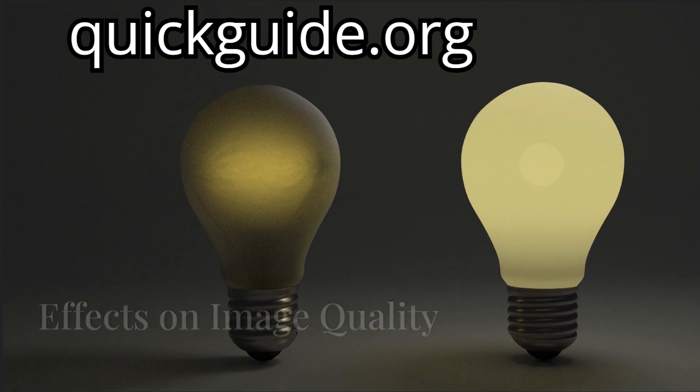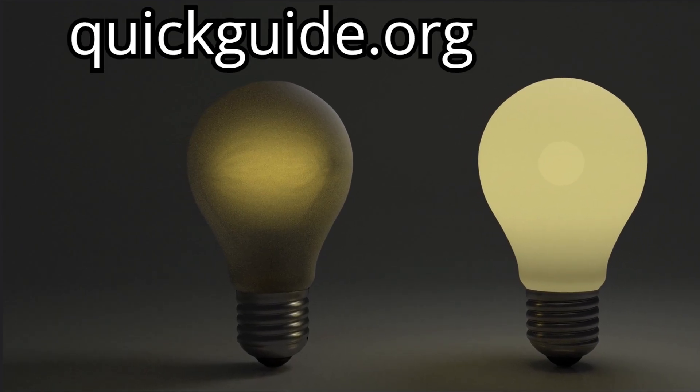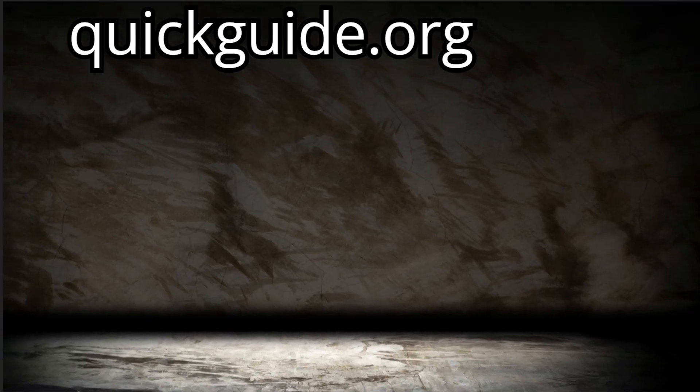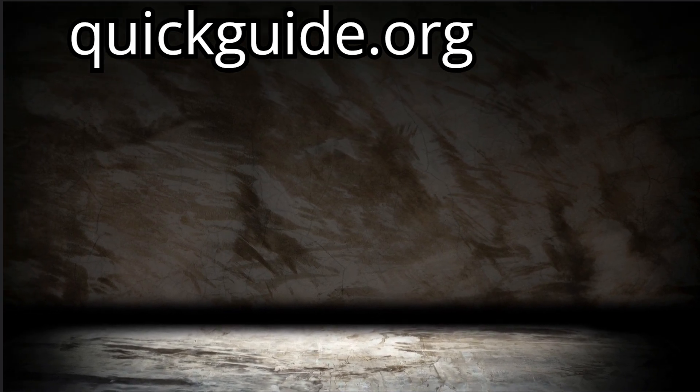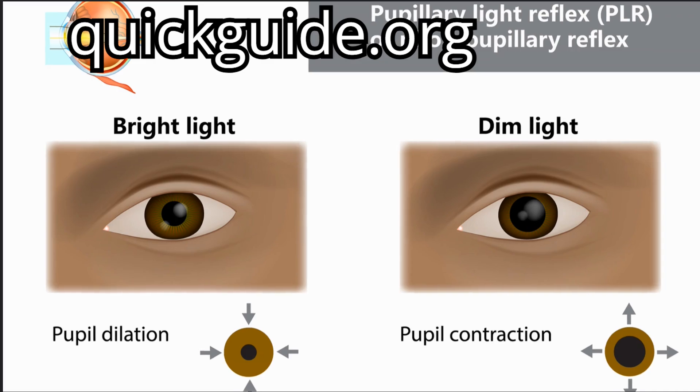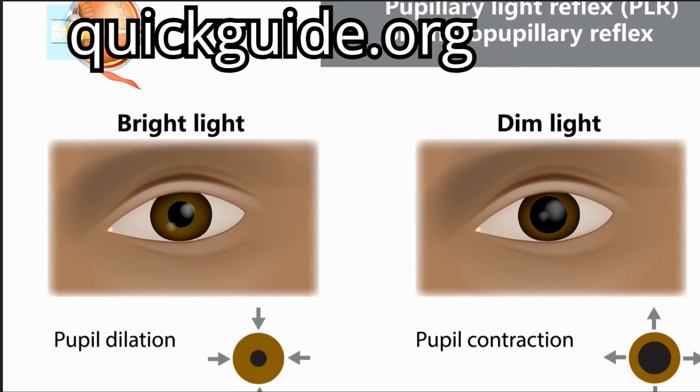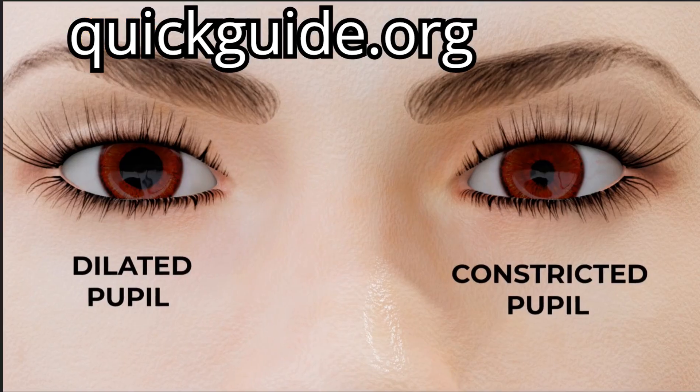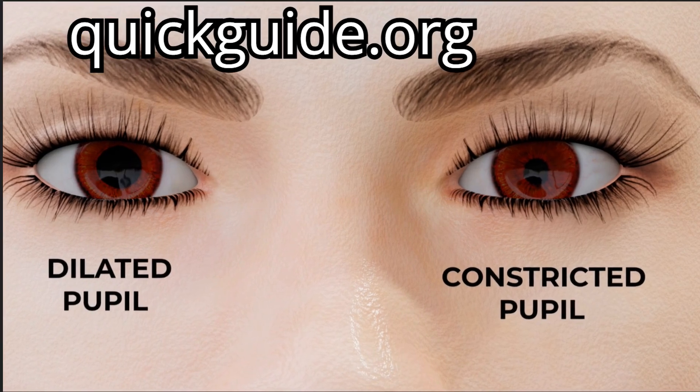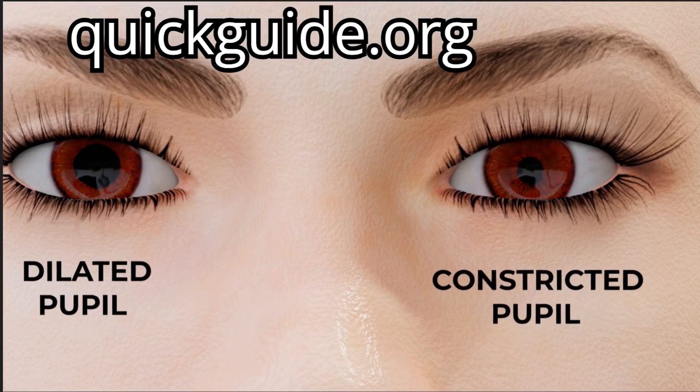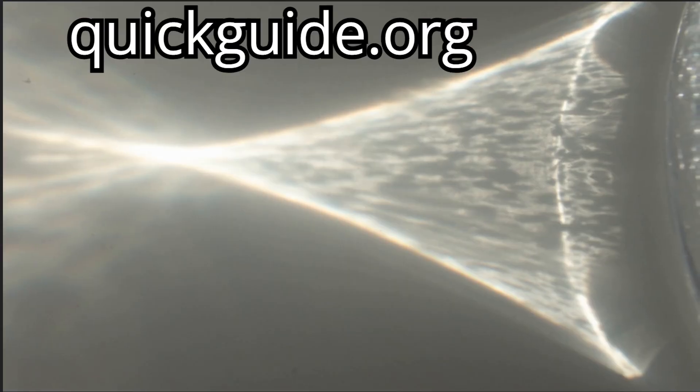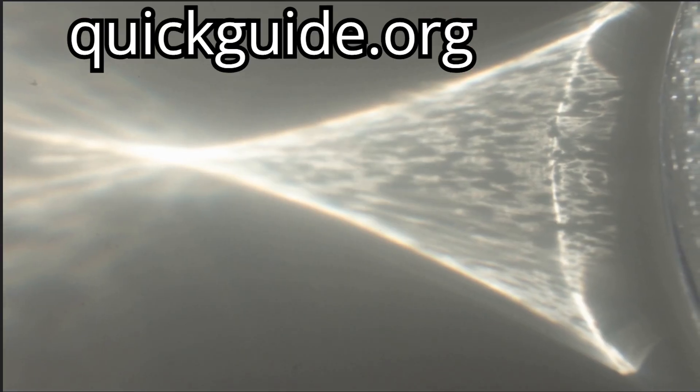This can lead to a drop in contrast and image quality, particularly in the mesopic or night time. This is because our pupil is dilated and more amount of peripheral rays of light enter the eye, unobstructed and fall before the focal point.